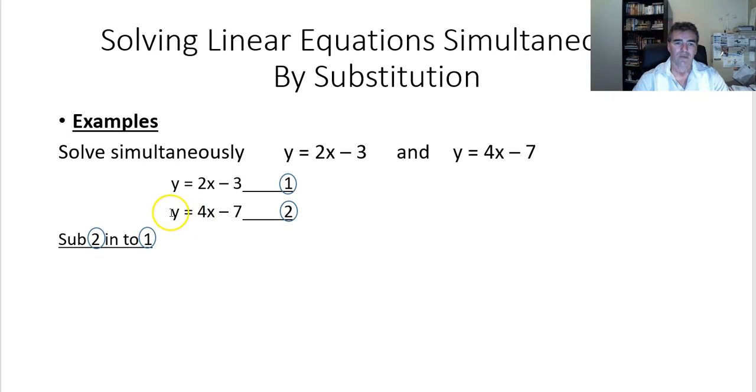We've got here y = 4x - 7. So wherever I see y, I can replace it with 4x - 7. Here's my equation 1. Wherever I see y, I'm going to replace it with that 4x - 7. I've just put where my y value was, this 4x - 7. Now I have an equation with pronumerals on both sides.